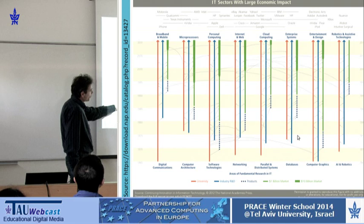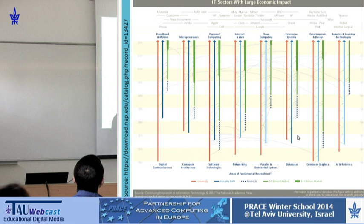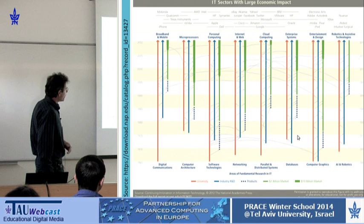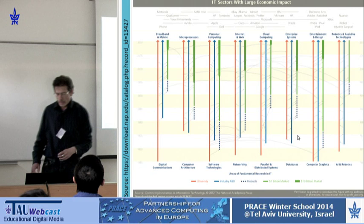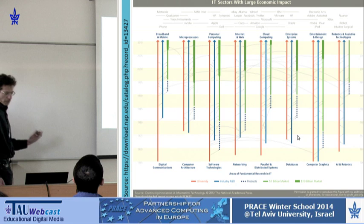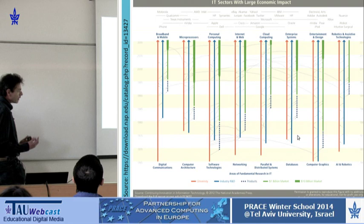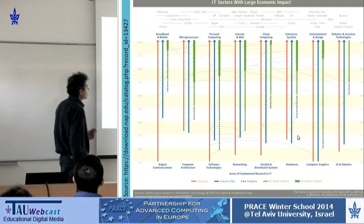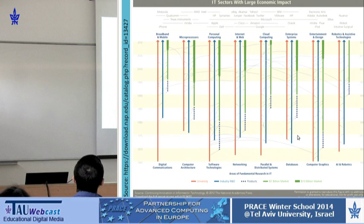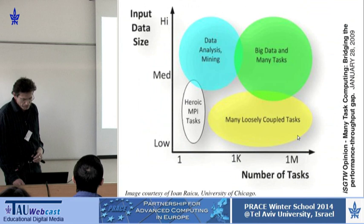Parallel and distributed computing has been among the major topics of computer science starting from the mid-1960s, beginning in academia and then the industry. When I started working in this field it was dubbed 'rocket science' because it was very rare, but these days parallel computing is everywhere — even in our cell phones. The most modern term covering parallel and distributed systems is cloud computing, but we will not discuss it too much here.